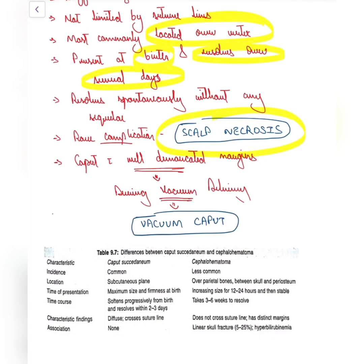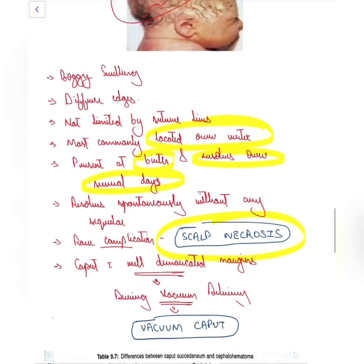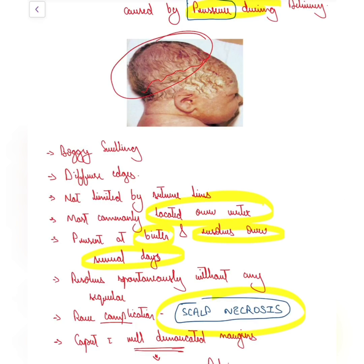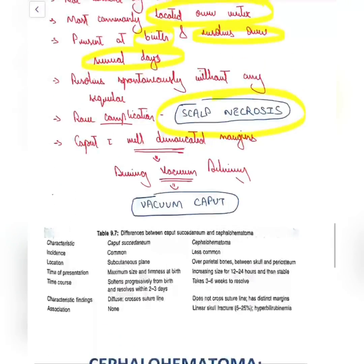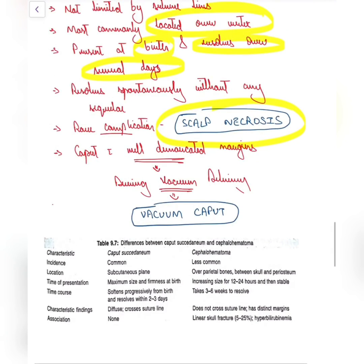A very rare complication is scalp necrosis. As already described, it is diffuse in nature. However, in cases where the borders are well-demarcated, it happens during vacuum delivery and is called vacuum caput.